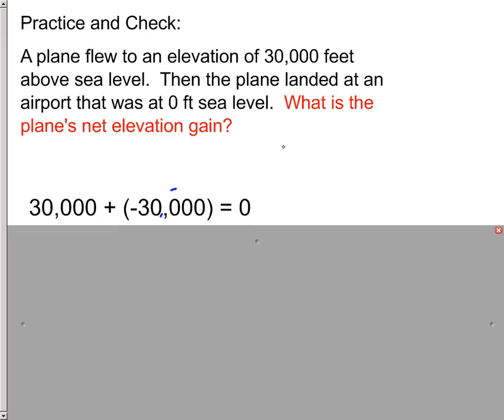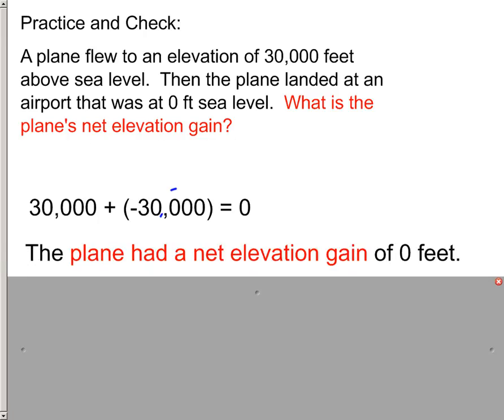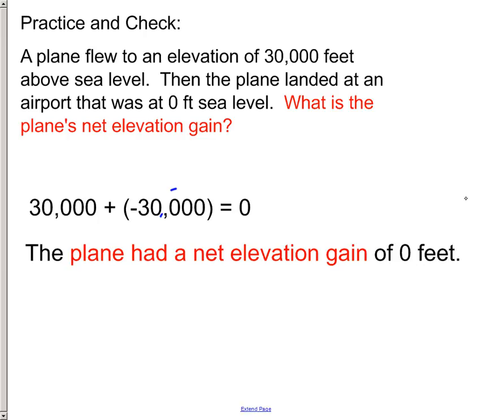Now this is a story problem so let's go ahead and just restate the problem here. You would say the plane's net elevation gain is 0 feet. The plane had a net elevation gain of 0 feet. See this was in red. You need to restate this in your answer. It's just good test taking practice no matter what class that you're in. Restate the question and a lot of times it will help you make sure that you didn't leave a part of the question out.